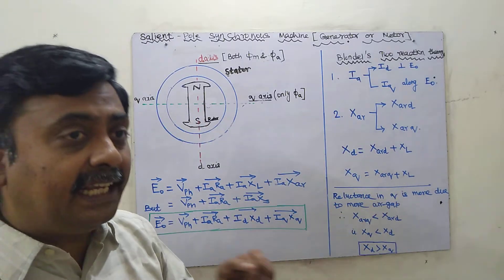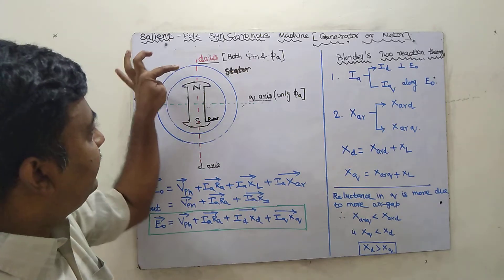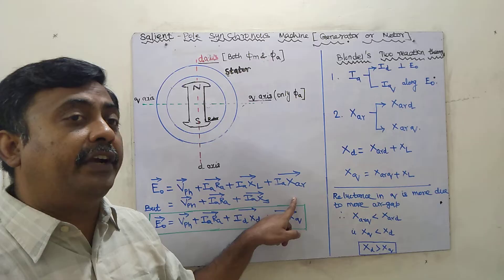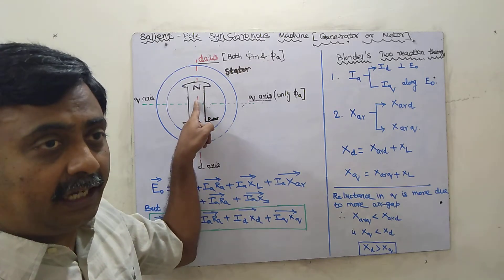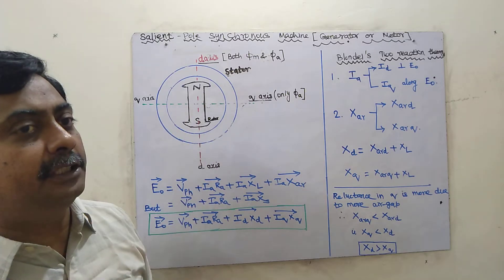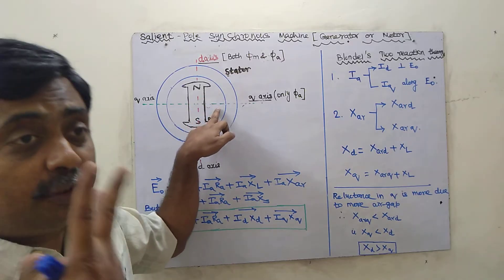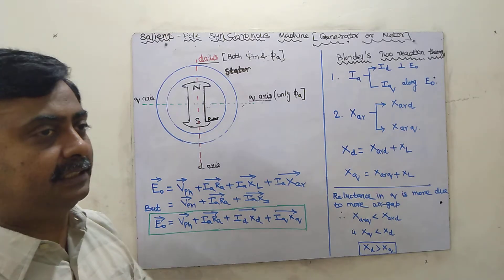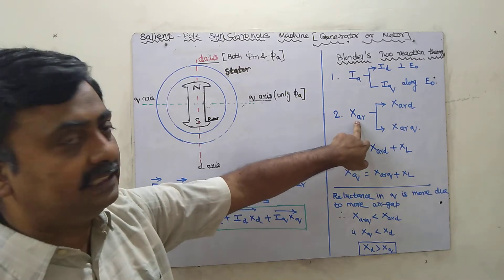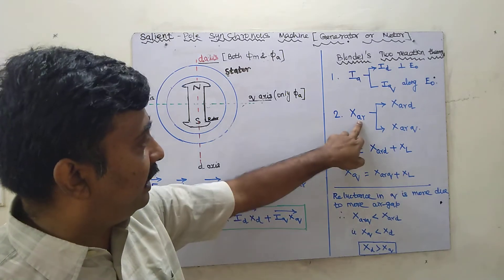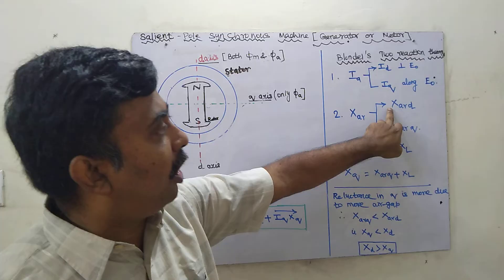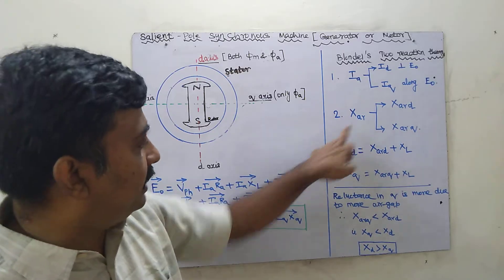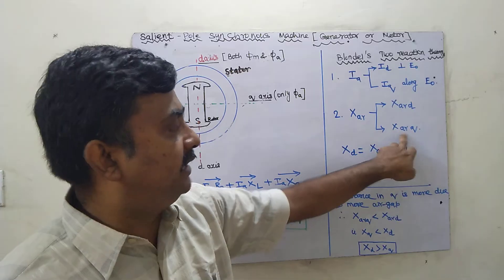From the leakage reactance point of view, XL will be the same in both axes — no issue there. But the armature reaction reactance changes. In the D-axis, both fluxes are present so it can be magnetizing or demagnetizing depending on power factor. In the Q-axis, there is no main flux — only armature flux — so it only cross-magnetizes. Therefore, armature reaction reactance (XAR) is divided into XARD (D-axis) and XARQ (Q-axis).